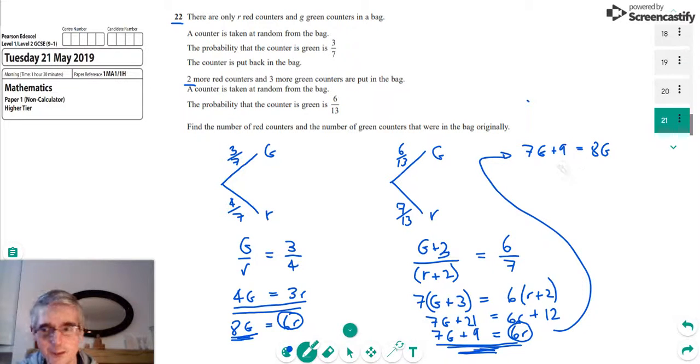If I take away 7G from both sides, what I'll end up with is that 9 is equal to 8G minus 7G, which is just G. So we've got it. G equals 9.